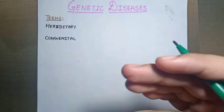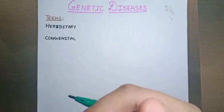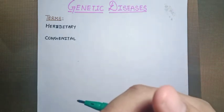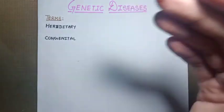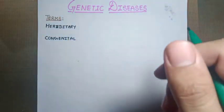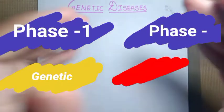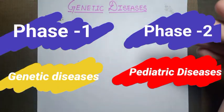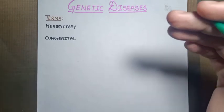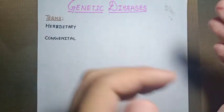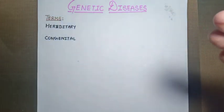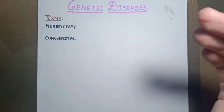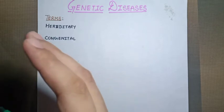Before we begin, let's talk about some general terms from Robbins, and then we will proceed further with the development of this chapter. We have divided the whole chapter into two phases. In the first phase we discuss genetic diseases, and in the second phase we discuss pediatric diseases, which are closely related to genetic diseases in terms of their causes.